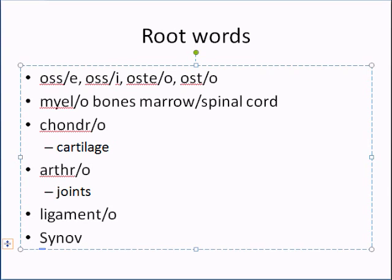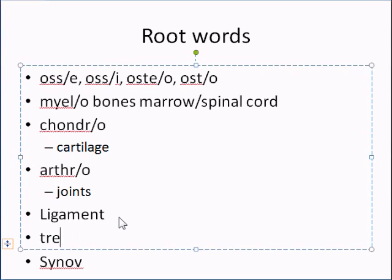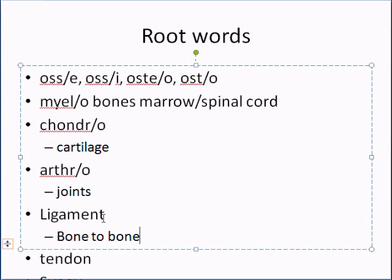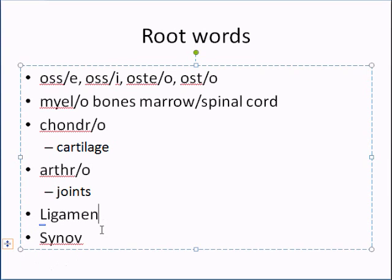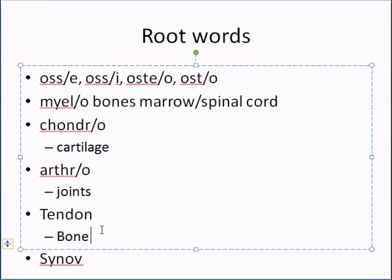Let's go over ligaments and cartilage, and tendons. The difference between a ligament and a tendon: a ligament connects bone to bone. A tendon connects bone to muscle. Simple as that.